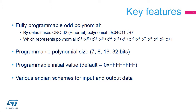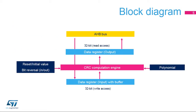The CRC calculation unit integrated in the STM32 features a fully programmable odd-value polynomial with a programmable size of 7, 8, 16, or 32 bits. The initial value is also fully programmable, allowing for very flexible run-time CRC code generation. The peripheral can be configured to support big or little endian formats of the input and output data, supporting various communication protocols. The CRC calculation unit is connected to the AHB bus interface for optimal performance.